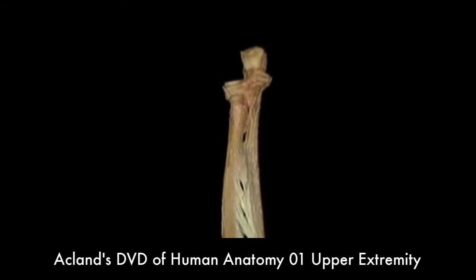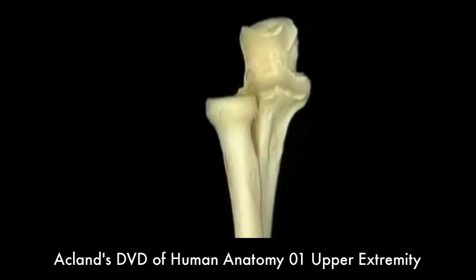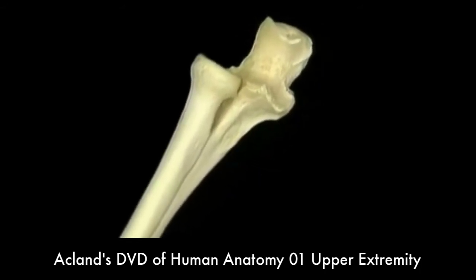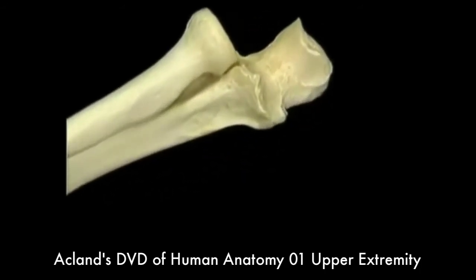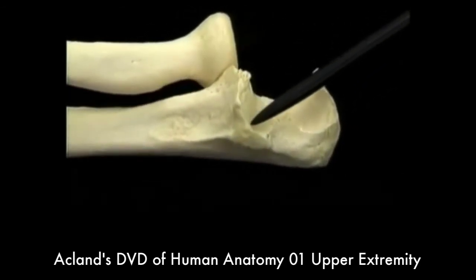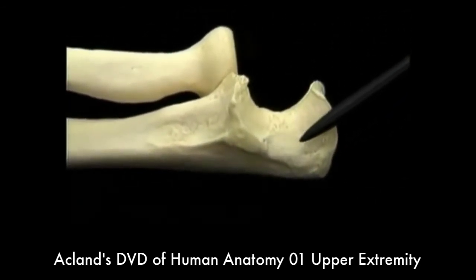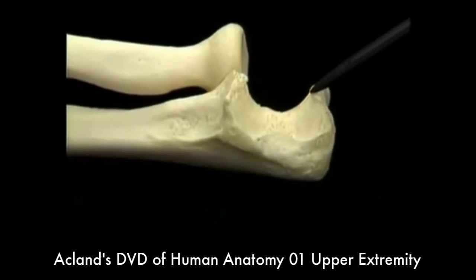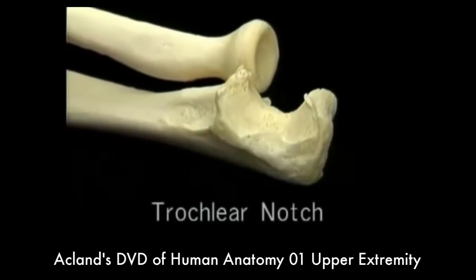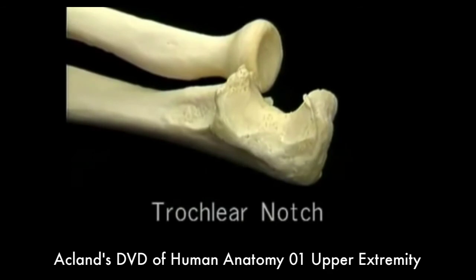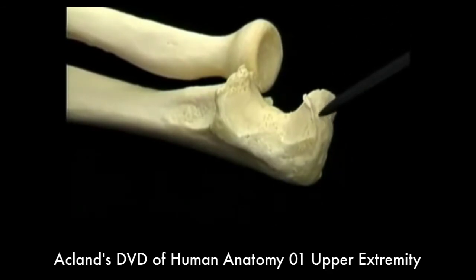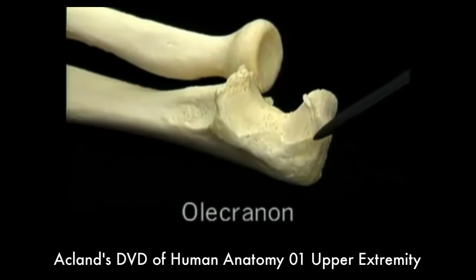Let's look at the proximal ends of the radius and the ulna — the ulna first. The main feature of the proximal end of the ulna is this large curved articular surface. The curve that it forms is called the trochlear notch, which articulates with the trochlea of the humerus. The very proximal end of the ulna is the olecranon, and the triceps tendon is attached to it.